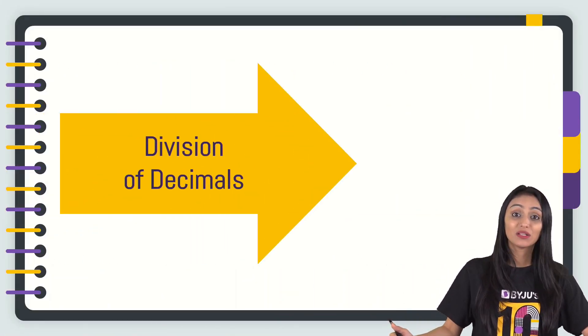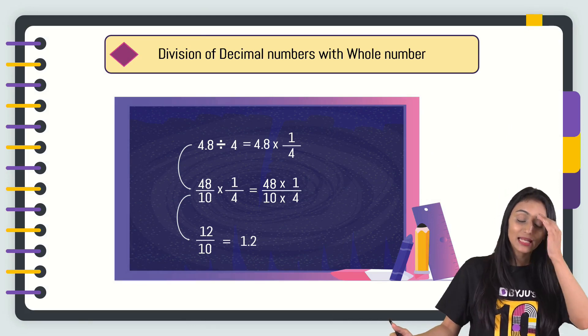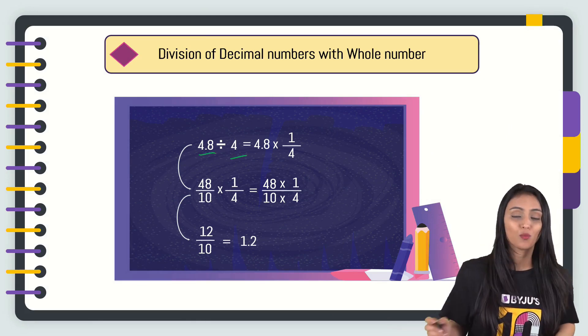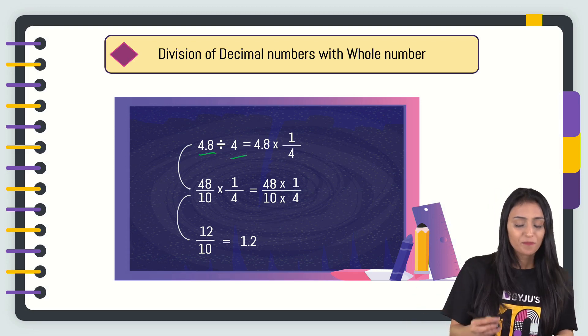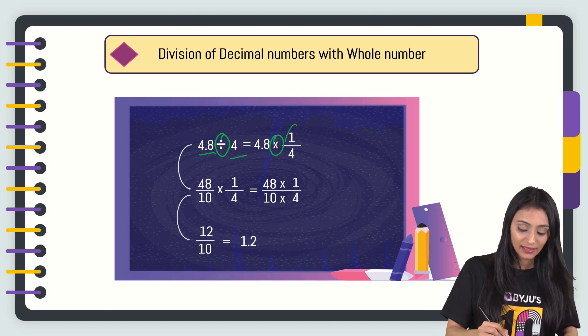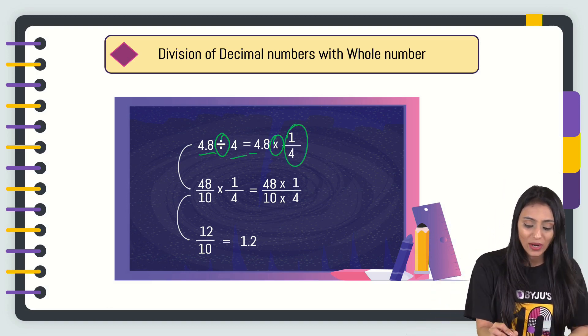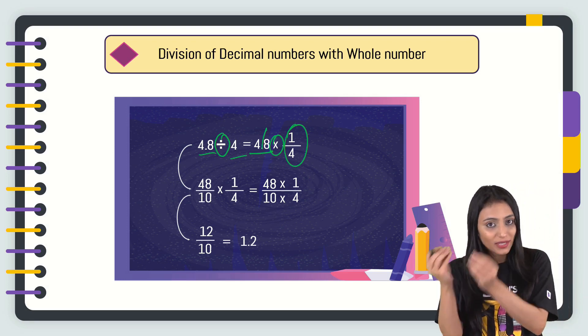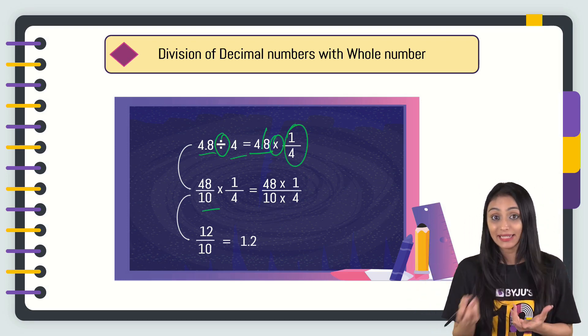Now let's move ahead. Let's talk about how division of decimals takes place. Let's suppose we have to divide this decimal number with a whole number. We have this example: 4.8 divided by 4. Simply, what we do? We generally change the division symbol to multiplication and we flip the number that is written after that. That's going to be 1 by 4. So 4.8, I can write this as 48 by 10 because you remove the decimal. There is one digit after the decimal point. That's why we're writing 10 over here.